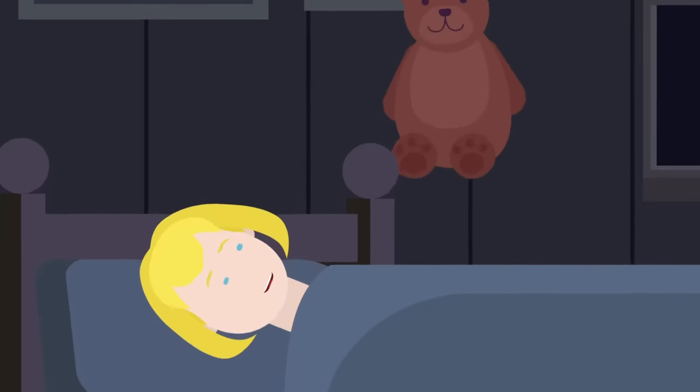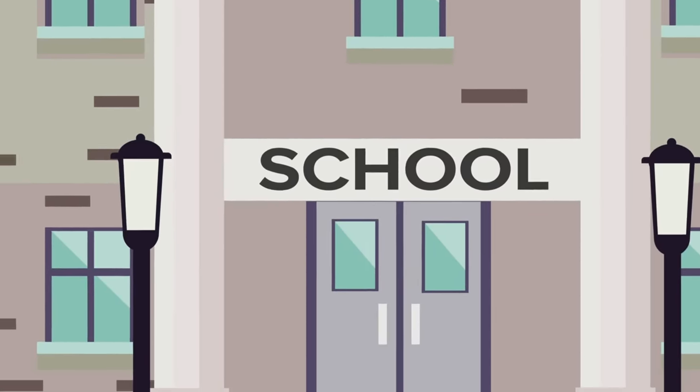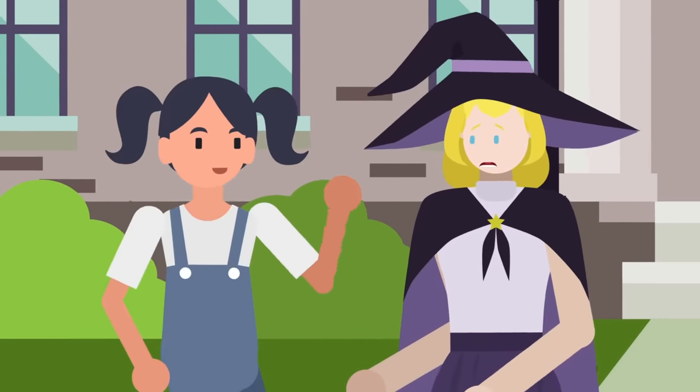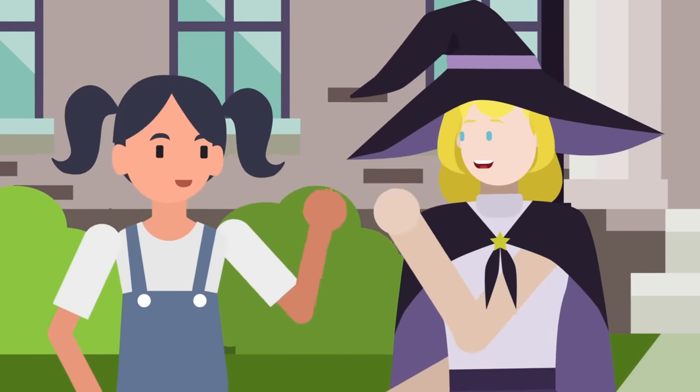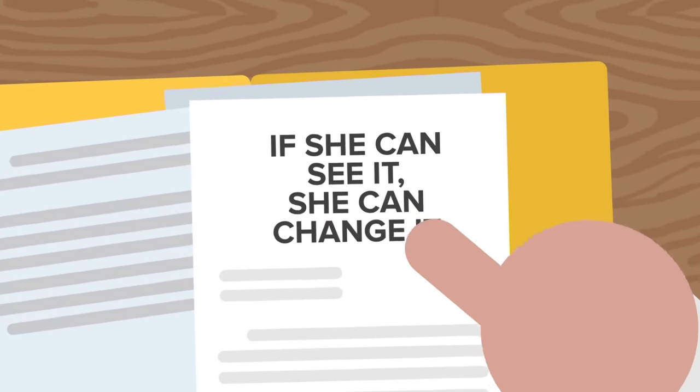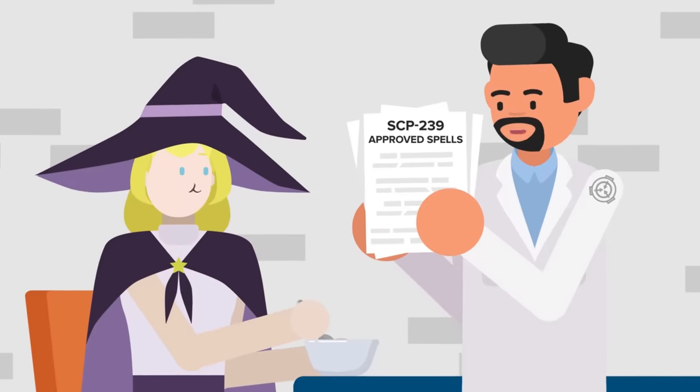She can influence the world and people around her in virtually any way that she can imagine. As long as she is conscious and can see her surroundings, SCP-239 can create living matter or make it disappear, wishing things into or out of existence with as little as a simple thought. As her file in the SCP Archive puts it, if she can see it, she can change it.